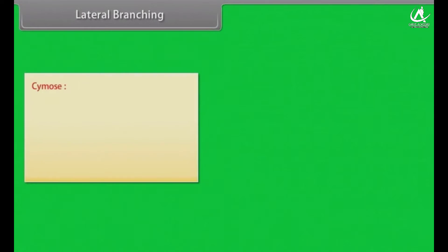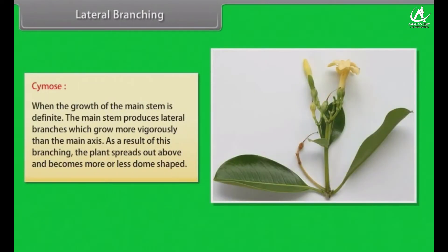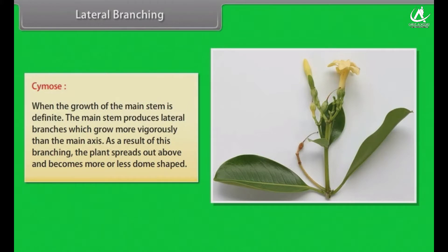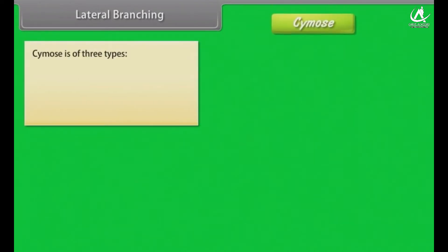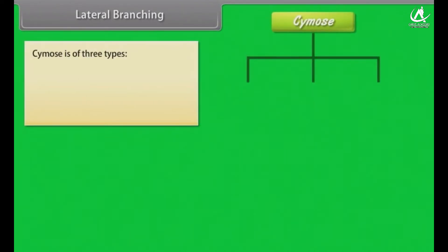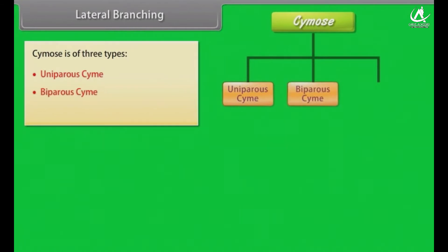In cymose branching, the growth of the main stem is definite. The main stem produces lateral branches which grow more vigorously than the main axis. As a result, the plant spreads out above and becomes more or less dome-shaped. Cymose is of three types: uniparous cymose, biparous cymose, and multiparous cymose.